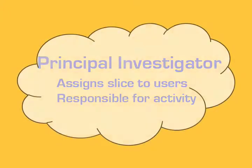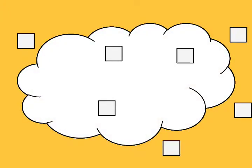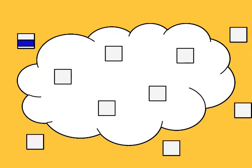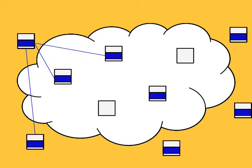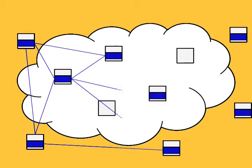A slice is a set of allocated resources distributed across PlanetLab. To most users, a slice means Unix shell access to private virtual servers on some number of PlanetLab nodes. After being assigned to a slice, a user may then assign nodes to it. Slices may be assigned to a user-selected set of PlanetLab nodes.